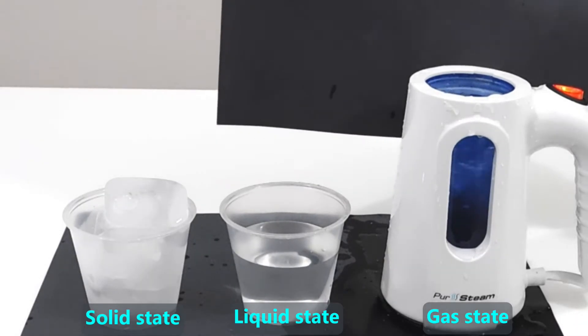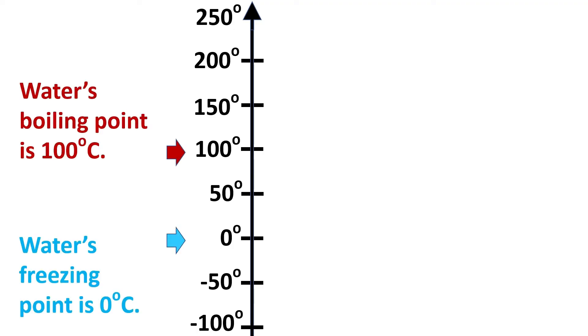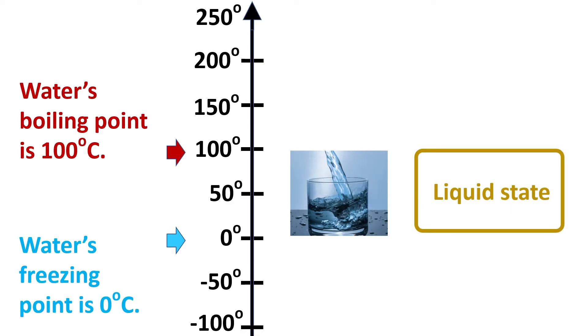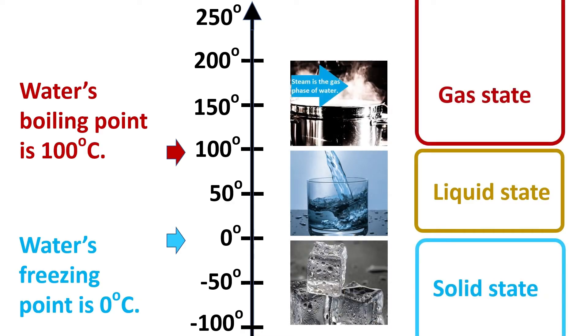Here is water in its three states. We can make a diagram of these states by drawing a vertical number line to represent temperatures. As with all number lines, the smaller numbers like 50 are close to zero, and the bigger numbers like 100 are farther from zero. The negative numbers are below zero. Next, we make marks where the boiling point and freezing points are. The state between these two marks is the liquid state. The state below the freezing point is the solid state, and the state above the boiling point is the gas state.